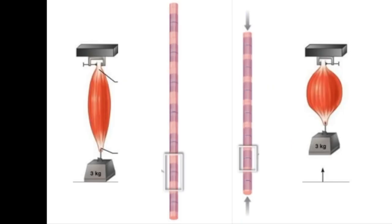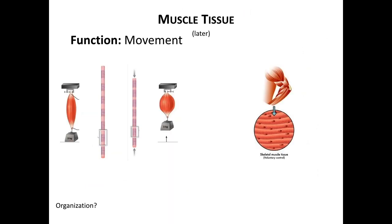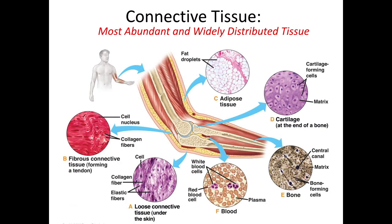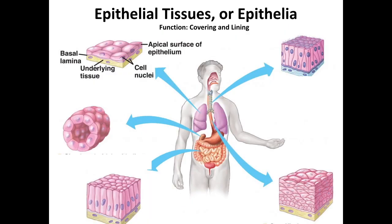Muscle tissue is specialized to contract and either exert a pulling or squeezing force. We'll go into detail in skeletal muscle and later discuss heart and smooth muscle as we get to them. Nervous tissue is specialized to respond to physical and chemical stimuli and change that stimuli into electrical impulses. Cells in the nervous system pick up signals from the environment and ultimately pass those impulses on to other neurons or muscles and glands. The next tissue is connective tissue, which is the most varied and widespread of the tissues, ranging from everything from blood to bone. And you'll learn why these are grouped under the same category in the upcoming lectures. The last tissue is epithelia, which we'll discuss in the second part of this lecture.